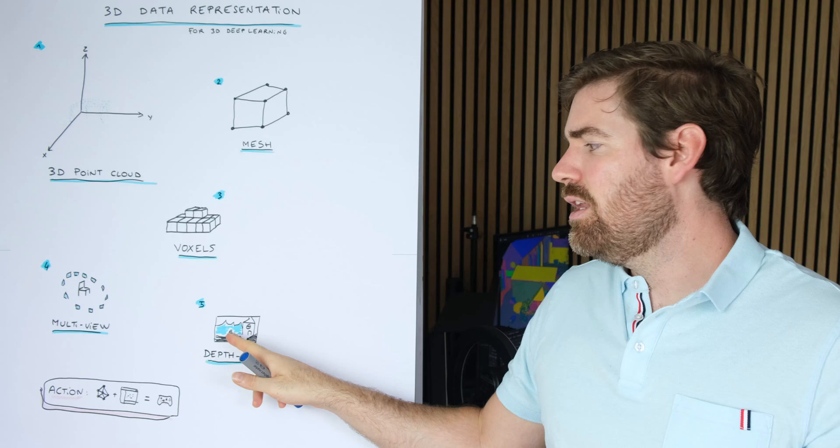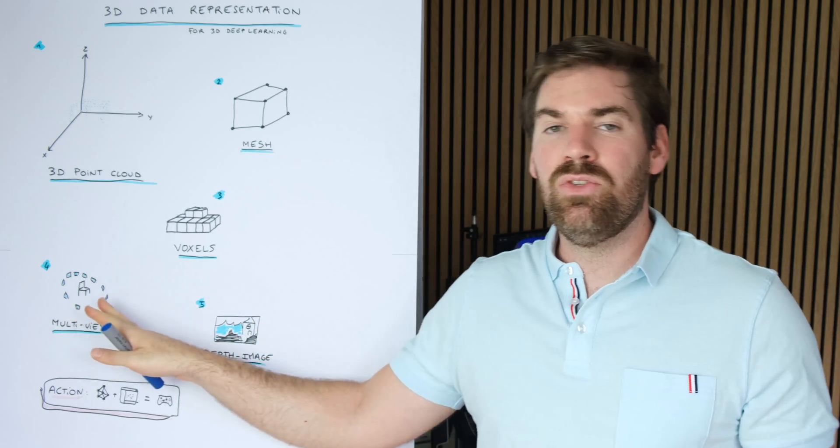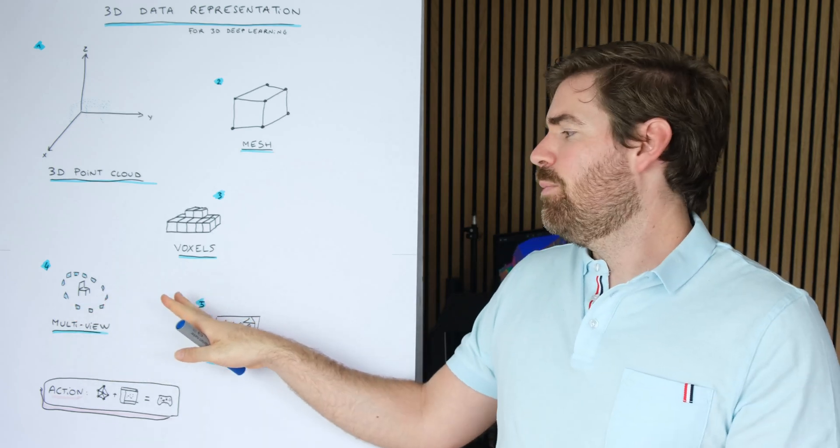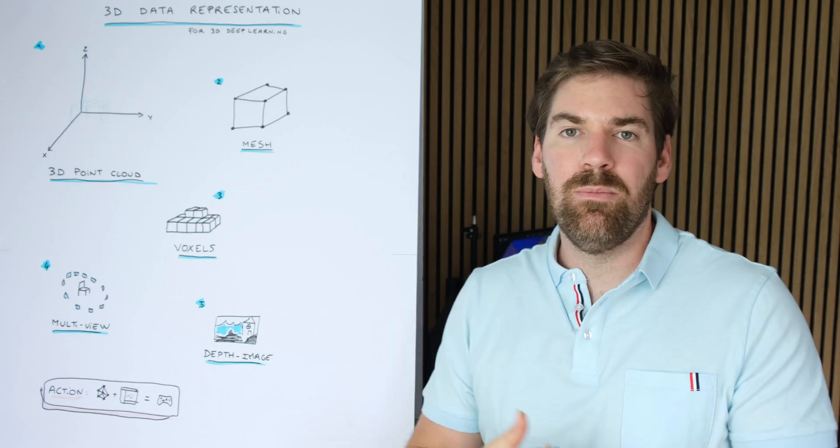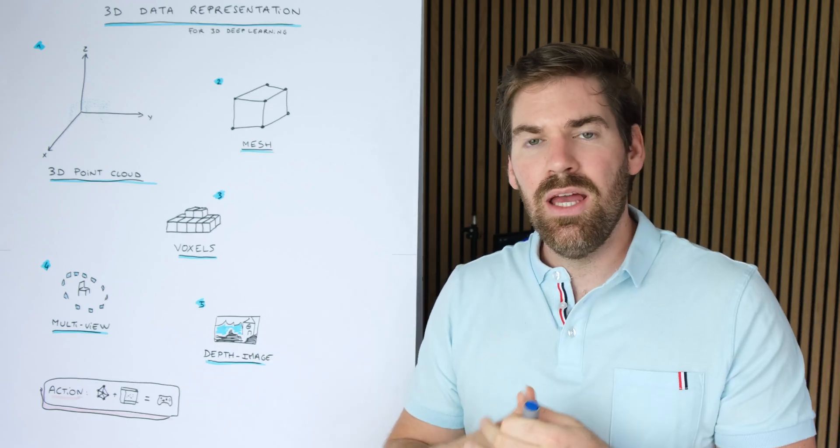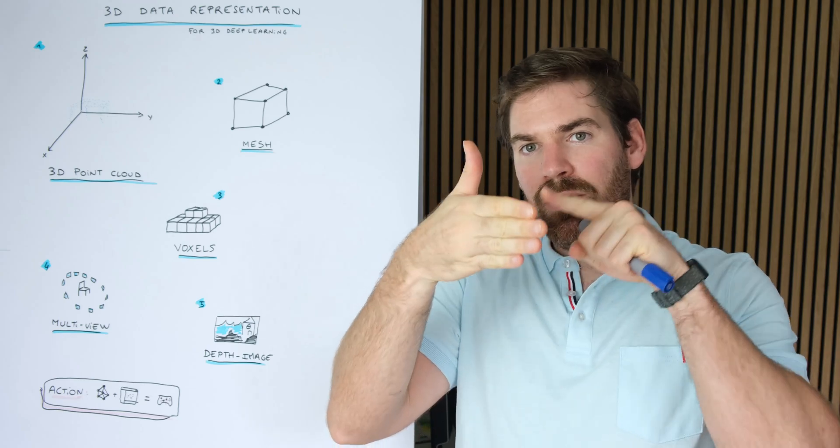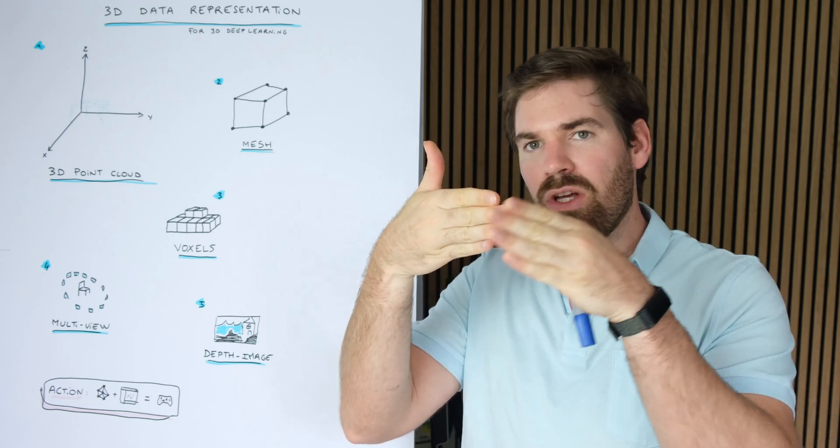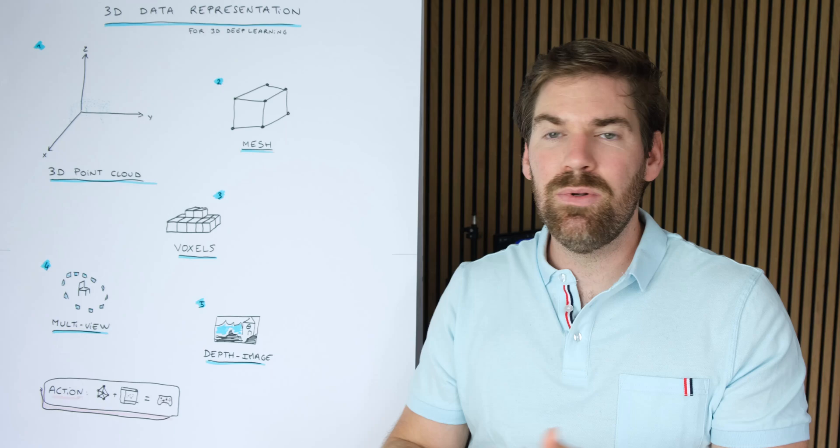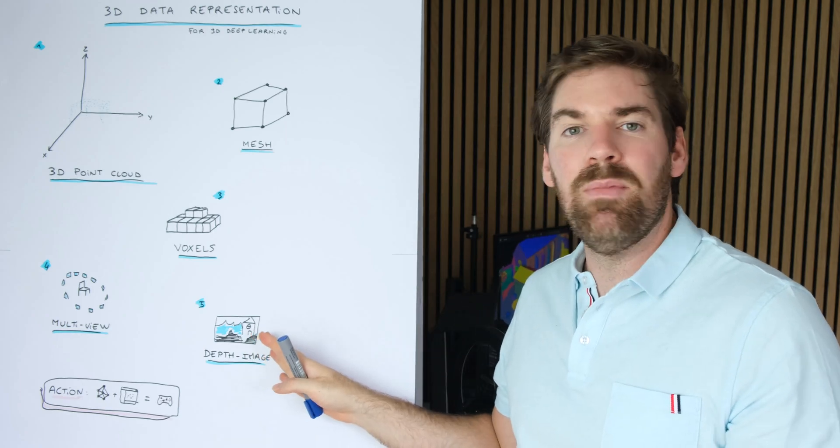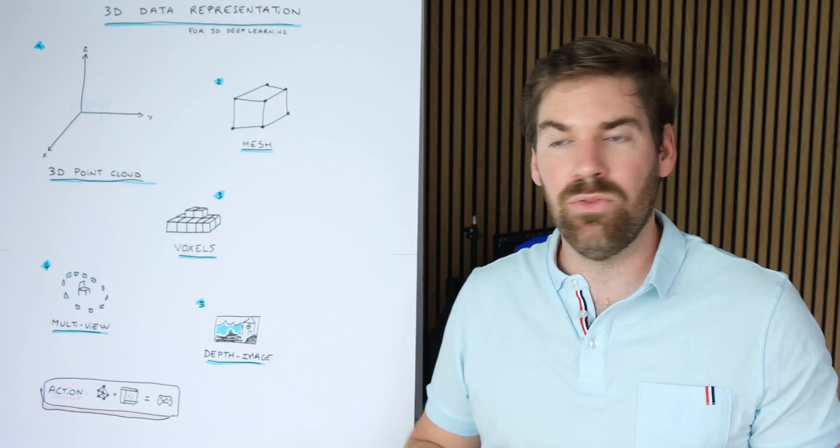And the last element which is also a 2D plus Z type of data representation would be the depth image. Basically, just taking one image and coloring the depth when you look at the image with levels of gray, for example. That's how usually you find them and we will explore how that looks onto the computer.